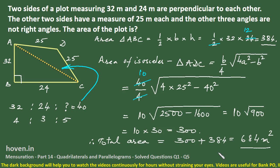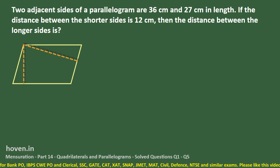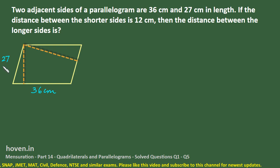Let us move to our next question now. Two adjacent sides of a parallelogram are 36 centimeter and 27 centimeter. If the distance between the shorter sides is 12 then the distance between the longer sides is what? We will start by drawing a schematic diagram. This is the schematic that we can draw. The lengths are given as 36 centimeter and 27 centimeter.